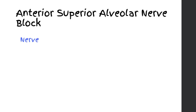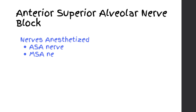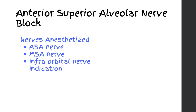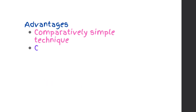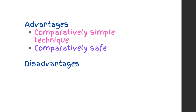Anterior Superior Alveolar Nerve Block. Nerves anesthetized: ASA nerve, MSA nerve, and infraorbital nerve. Indications: procedures involving more than two maxillary teeth. Advantages: comparatively simple technique; comparatively safe.